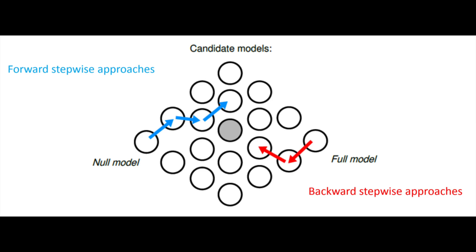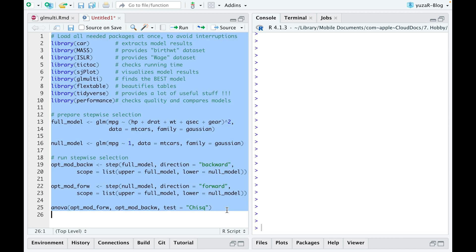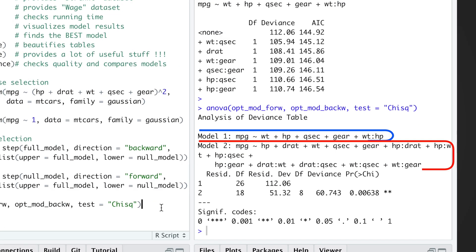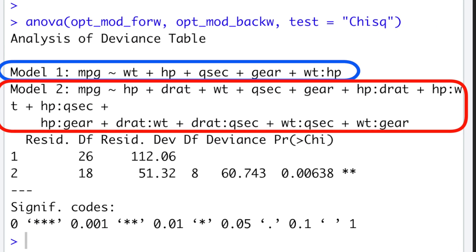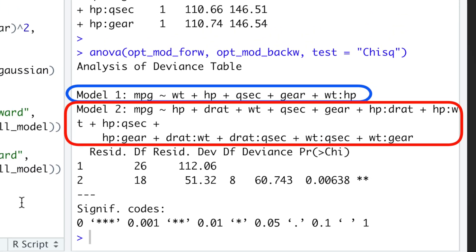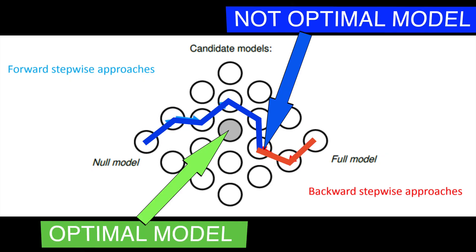Stepwise selection applies to your main techniques, forwards and backwards selection. But there are two problems with it. First, forwards and backwards approaches would often not converge to the same model, like in our example. And secondly, even if they converge to the same model, this model might not be the optimal one.